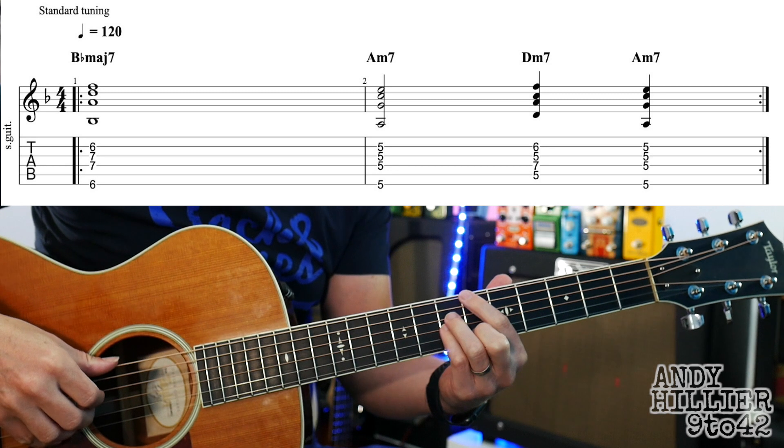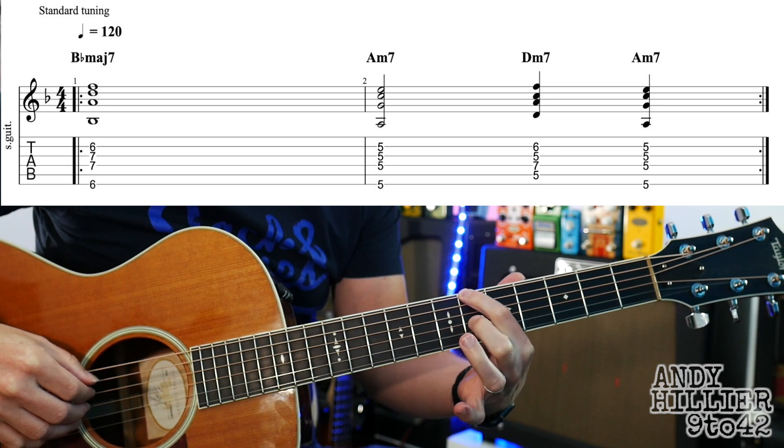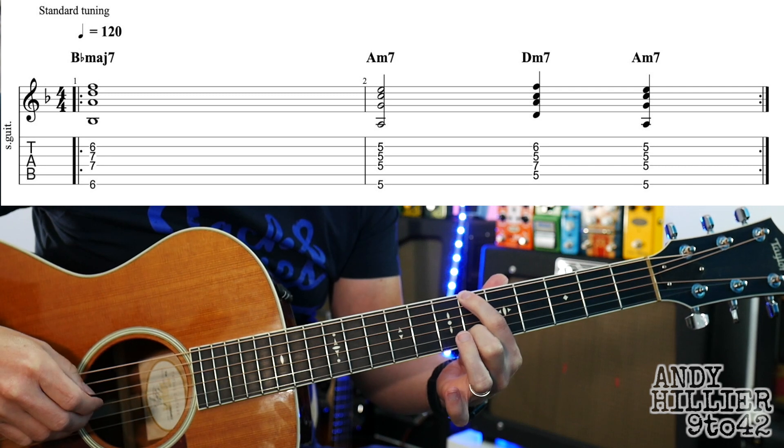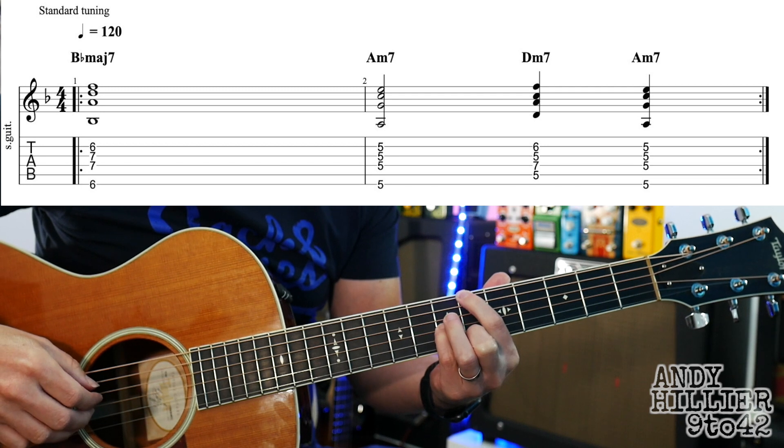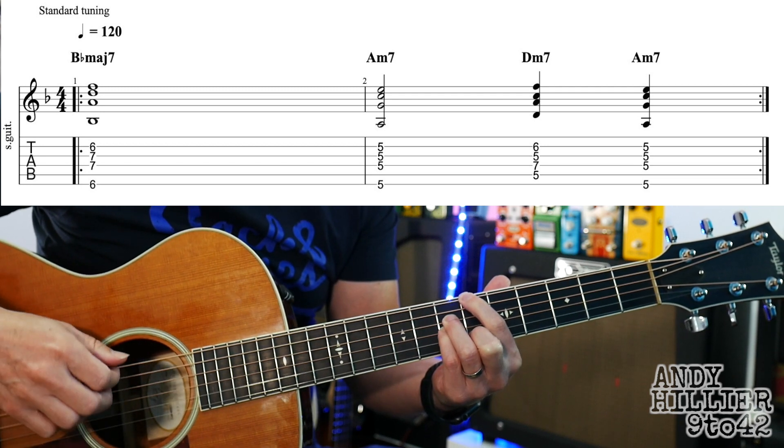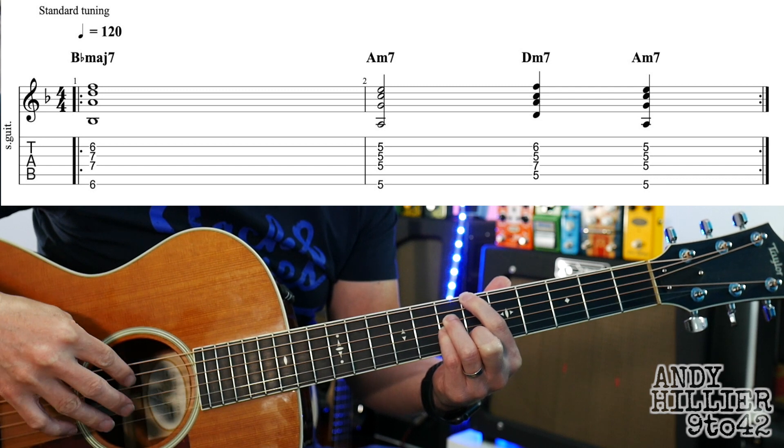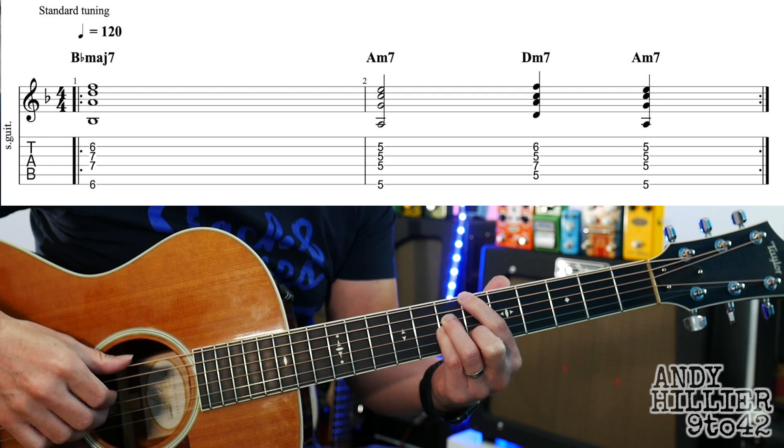So the Bbmaj7 is your first finger on E6, second finger on B6, little finger on G7, third finger on D7. And I'm playing my thumb on the E string, index finger, middle finger and ring finger on the next three strings.